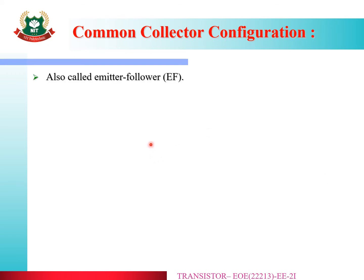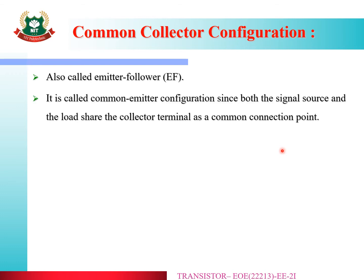This Common Collector Configuration is also called the Emitter Follower Circuit. It is called the Emitter Follower Circuit since both the signal source and the load share the collector terminal as a common connection point.